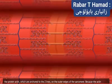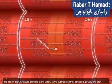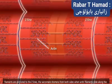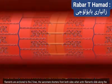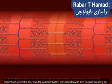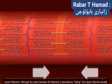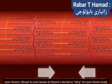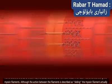The thin filaments are composed of the protein actin, which are anchored to the Z-lines on the outer edges of the sarcomere. Because the actin filaments are anchored to the Z-lines, the sarcomere shortens from both sides when actin filaments slide along the myosin filaments.